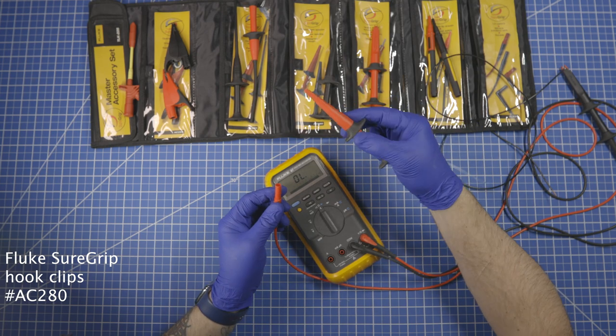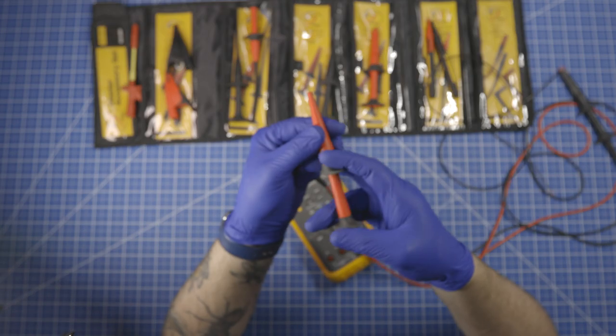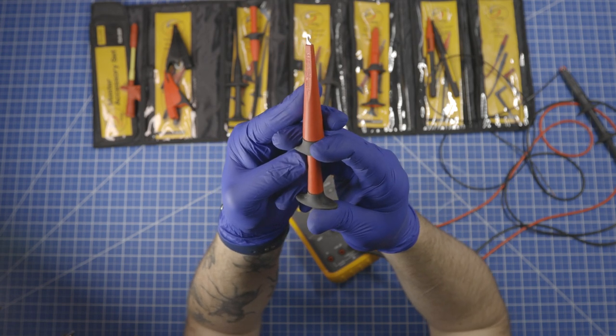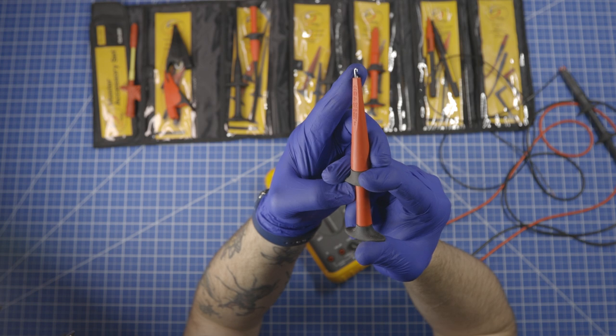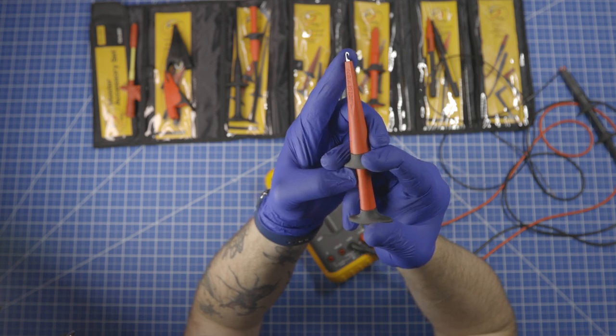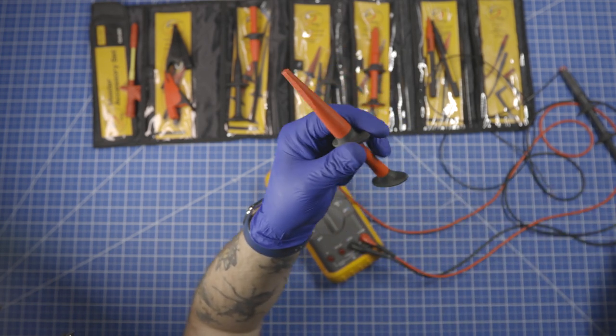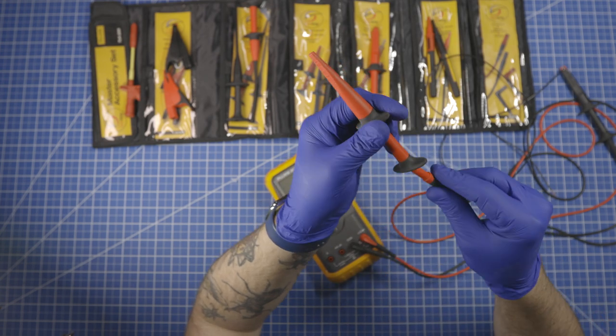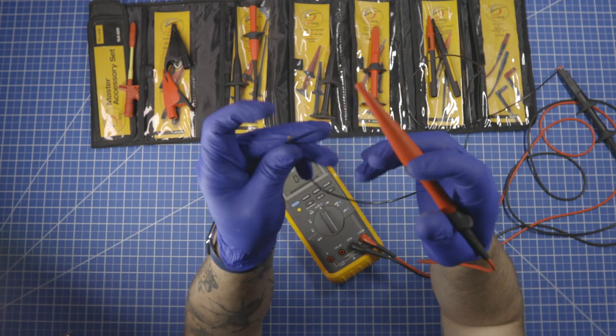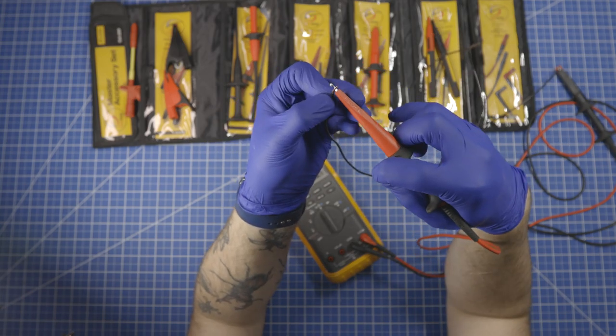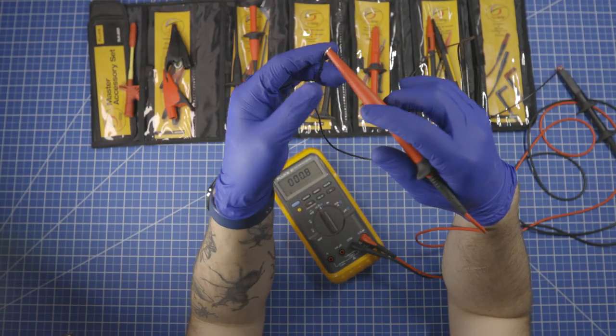This one is also a little grabber end but it's a hook. So this is much more designed for hooking onto the legs of electronic components, onto the ends of wires, things like that. So for example, just take the hook, put the wire in, and it grabs on.